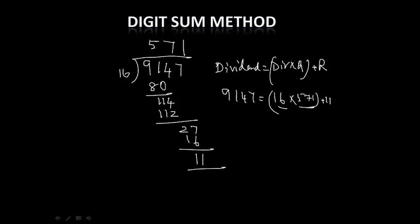So instead of multiplying these two numbers, we can do the digit sum. We have to sum up the digits in each and every number. For example, take the dividend: 9 plus 1 is 10, 10 plus 4 is 14, 14 plus 7 is 21. So again, this is a double digit number, therefore you sum up 2 and 1, so 2 plus 1 is 3.